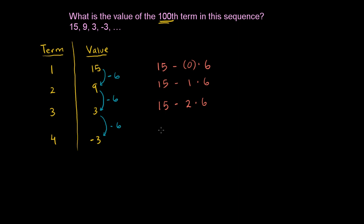What's the fourth term? This is 15 minus, we're subtracting the 6 three times from the 15, so minus 3 times 6. So if you see the pattern here, when we have our fourth term, we have the term minus 1 right there. The fourth term, we have a 3. The third term, we have a 2.